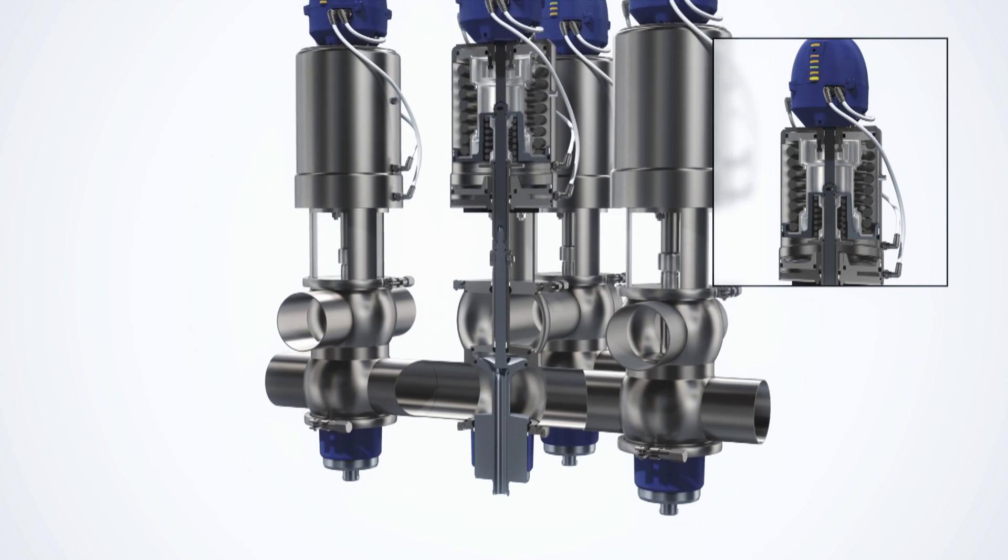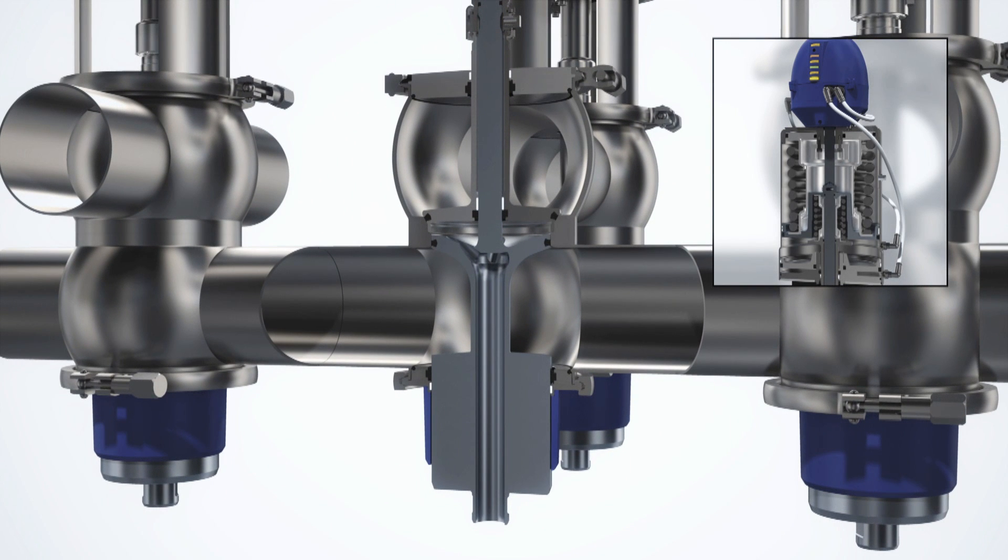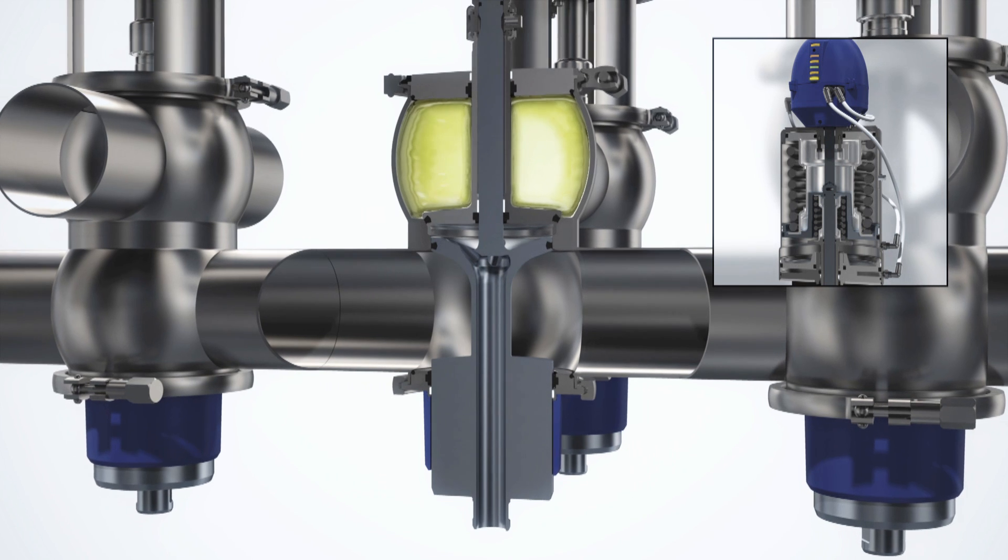With a unique mix-proof valve, you get double block and bleed functionality in one compact valve. In the event of plug seal failure, leakage will be visible at the bottom of the valve.